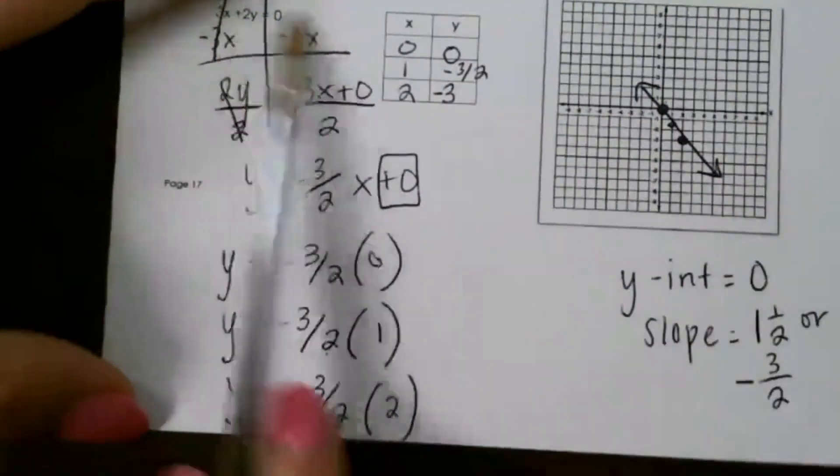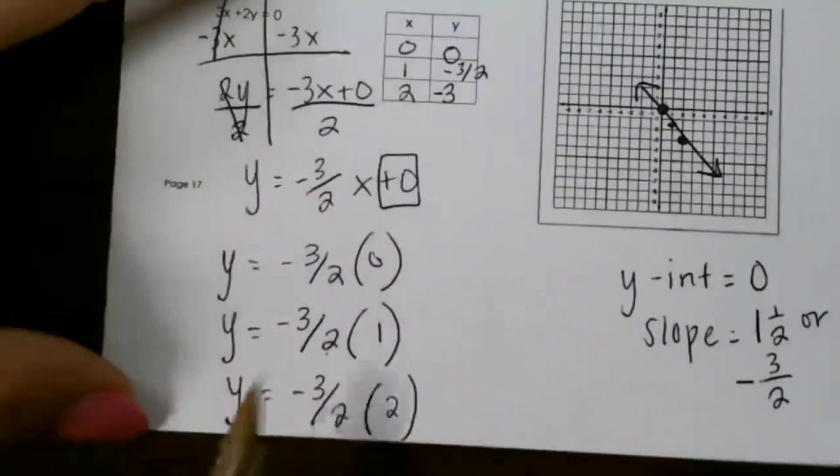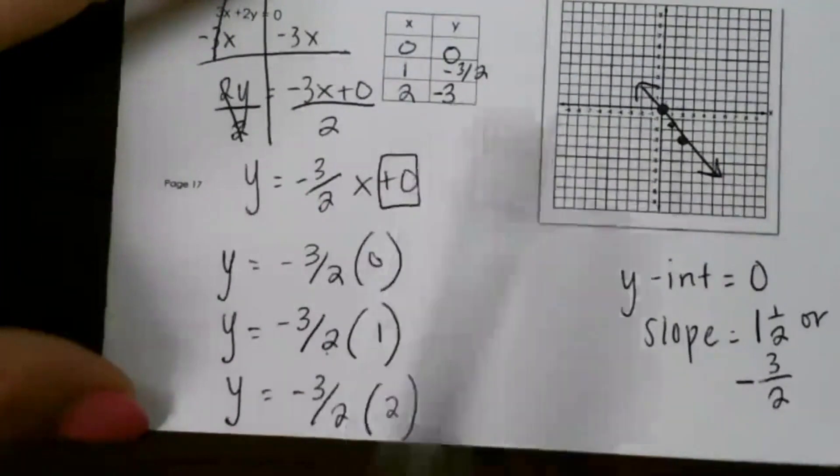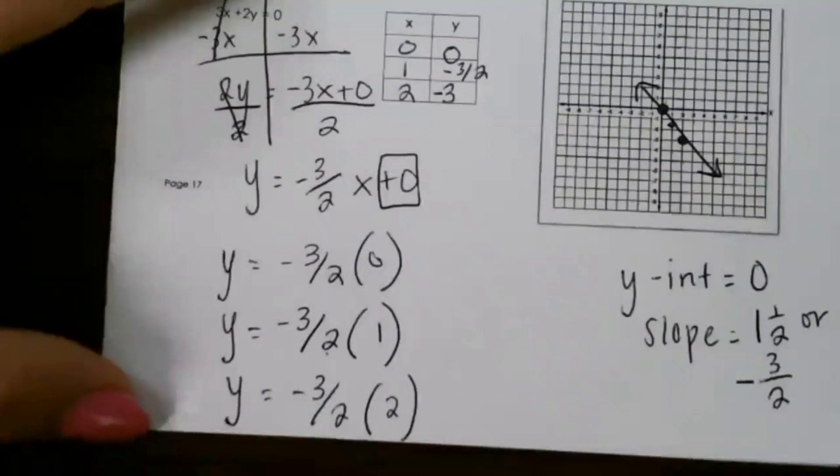So again, put it into slope-intercept form, solve for your output values, graph your line, and you can get your y-intercept and your slope just like that.